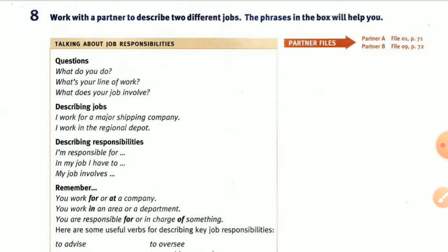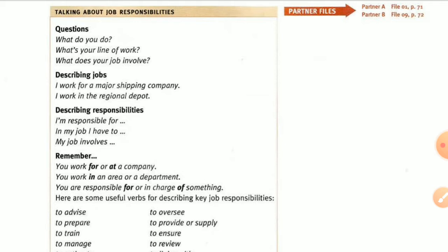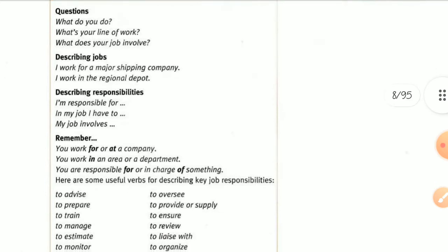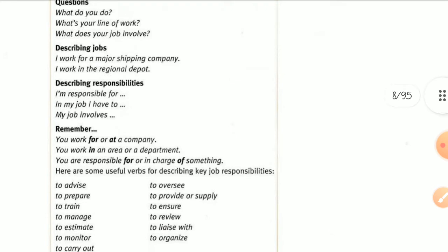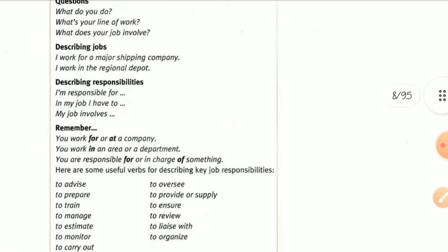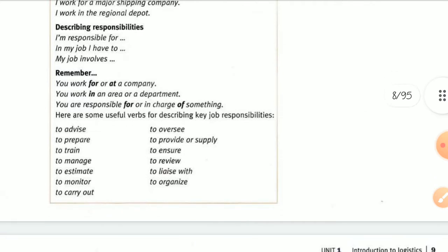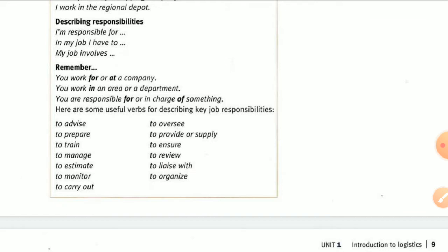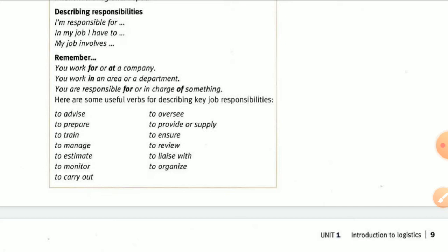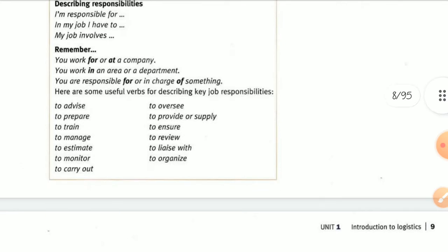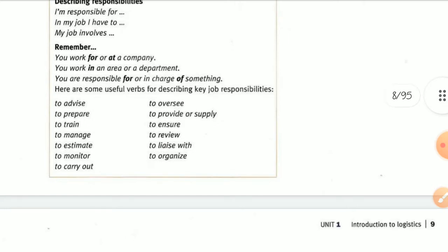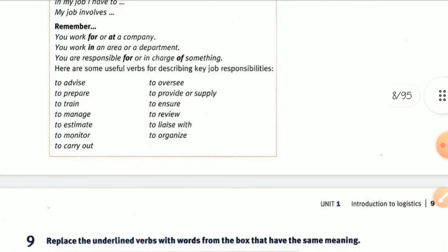Now work with a partner to describe two different jobs. We have some useful phrases. Questions you can ask: 'What do you do?' or 'What's your line of work?' and 'What does your job involve?' For describing jobs, you can say: 'I work for a major shipping company' or 'I work in the regional depot.' You can describe responsibilities using: 'I'm responsible for...' or 'In my job I have to...'